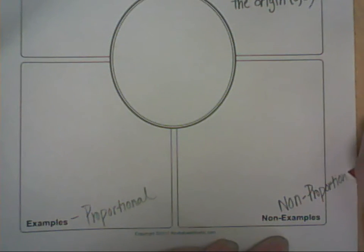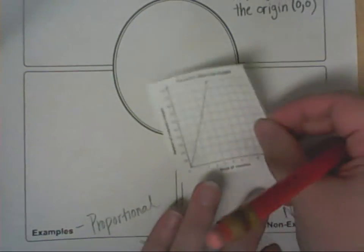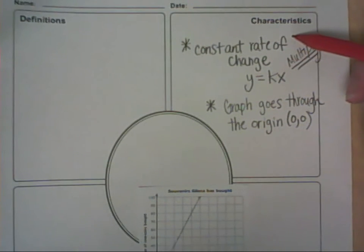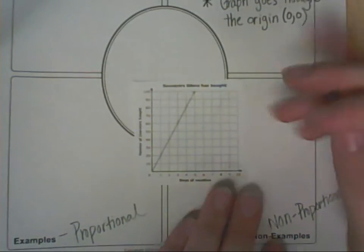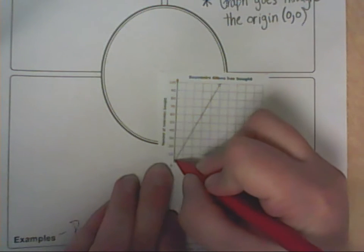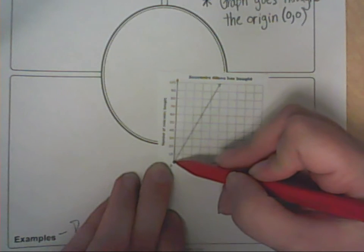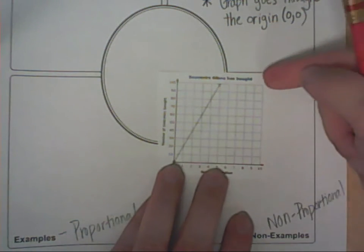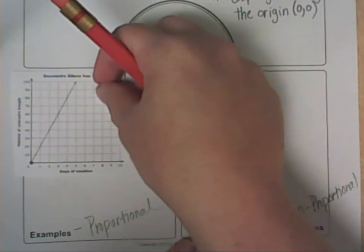Let's first look at a graph. The graph is typically the easiest one to determine. Based on our characteristics, the graph has to go through the origin (0, 0). Let's put a dot on our origin (0, 0). Does the line intersect through that point? Yes, it does. So therefore we can determine that this graph is proportional, and we're going to place it on this side.